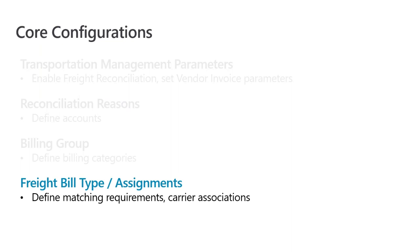Then we have freight bill types and freight bill type assignments. The freight bill type allows you to define which fields are required to match between the freight bill estimate and the carrier invoice actual amount during the auto-match and pay or auto-reconciliation process. The freight bill type assignment allows you to define the carrier association for those different freight bill types — which types are used by which carriers — and that helps when carrier invoices are put into the system and the reconciliation process is run.